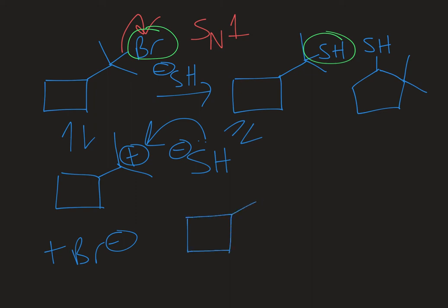I also see the rearranged product where my ring has expanded. If we redraw the carbocation intermediate that is initially formed, we're going to have a ring expansion occur here, and this always freaks students out, but it's just the same as a methyl shift or a hydride shift. A group is moving over to the carbocation to form a new bond there.